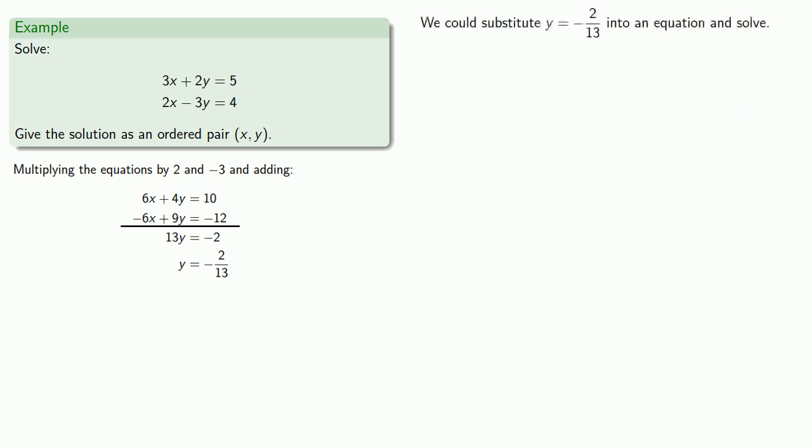Now, we could substitute y equals negative 2 thirteenths into an equation and solve, just like we did the last time. But, I don't know about you, but we'd rather not work with fractions. So, let's solve for x in the same way we solve for y.